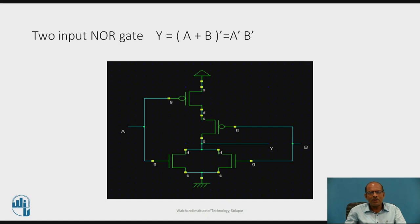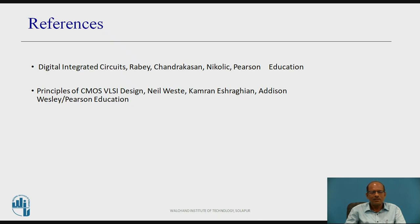This is the 2-input NOR gate. For example, if asked to design a 3-input NOR gate, instead of two MOSFETs there will be three PMOS connected in series for the pull-up network and three NMOS connected in parallel for the pull-down network. In this way, we can design and implement any Boolean expression using CMOS logic. Today we have learned what is CMOS logic, how to use MOSFET as switches, design of CMOS inverter, and design of 2-input NAND gate and 2-input NOR gate. These are the references. Thank you.